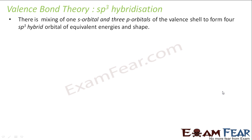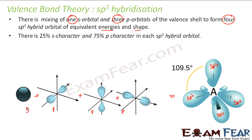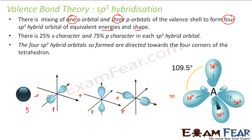Let's take SP3 hybridization now. In SP3, we have one S orbital and three P orbitals. They hybridize and form four SP3 hybridized orbitals of equivalent energy and shape. For example, one S orbital and three P orbitals all merge and hybridize to form four SP3 hybrid orbitals, all having equal energies. These have 25% S character and 75% P character because there is only one S and three P involved. It is tetrahedral in shape with 109.5 degrees as the bond angle.